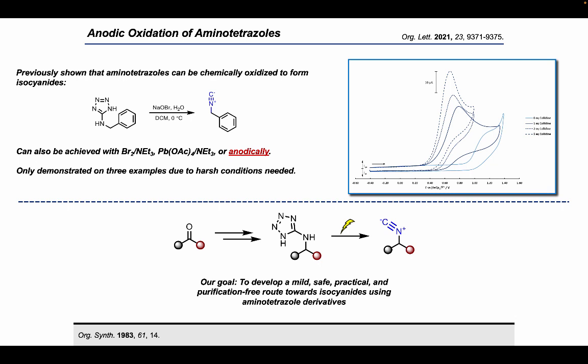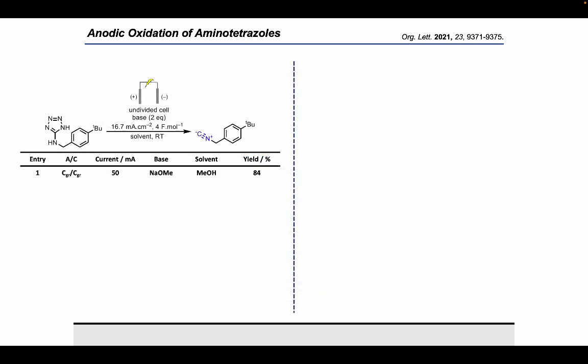This was excellent news as it aligned very well with our goal to develop a mild, safe, practical and hopefully purification-free route towards isocyanides using aminotetrazole derivatives. What we found was when we take some of our aminotetrazole and electrolyze them with an applied current of 50 mA using carbon graphite electrodes in a basic methanolic solution, the corresponding isocyanide was cleanly formed in about 84% yield after workup.